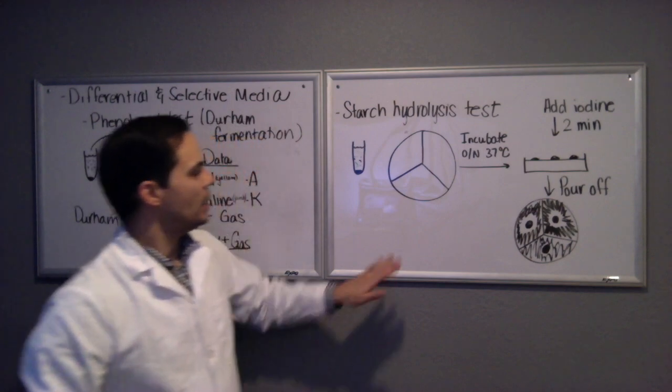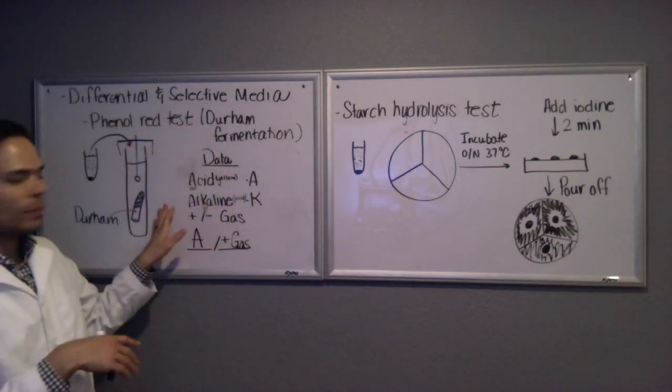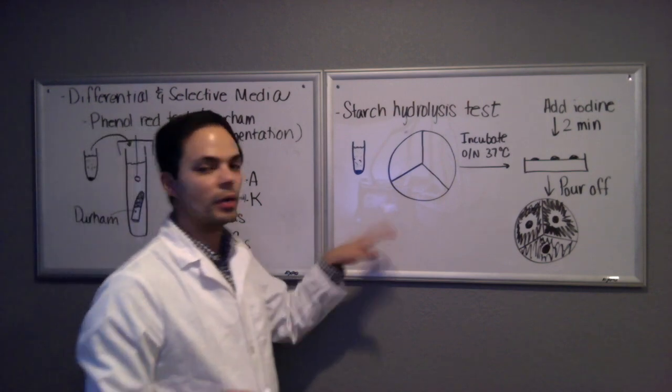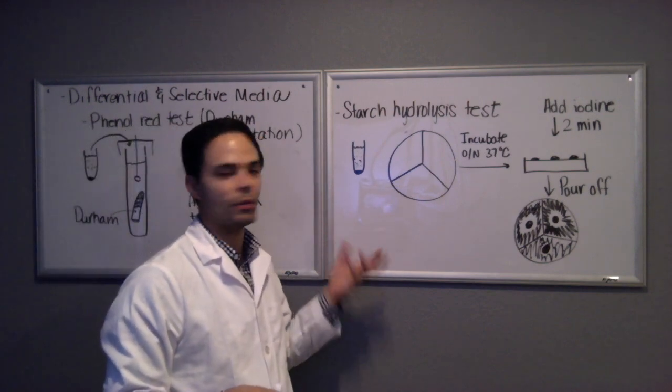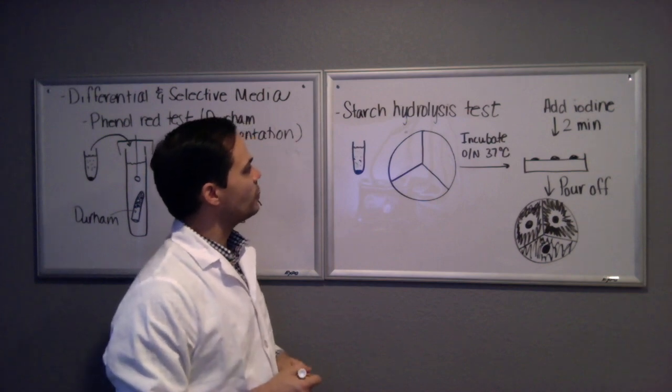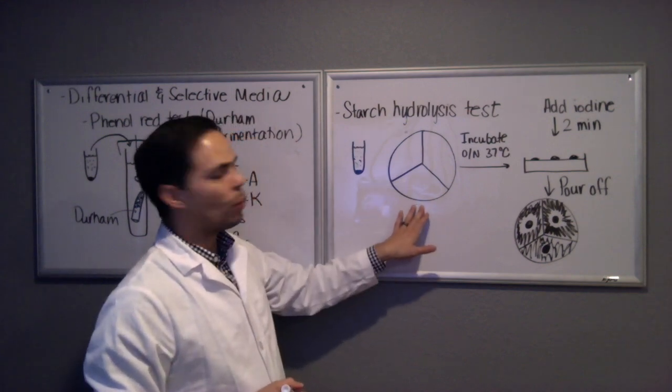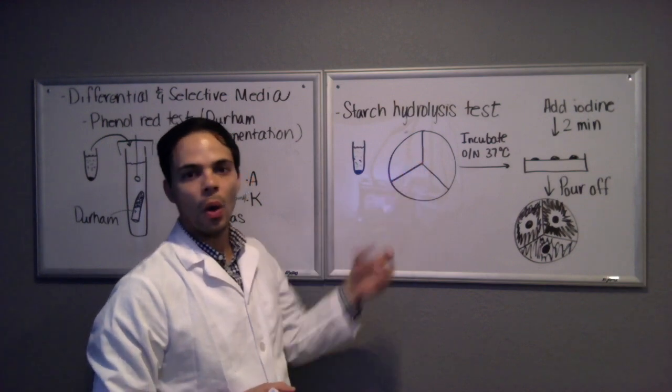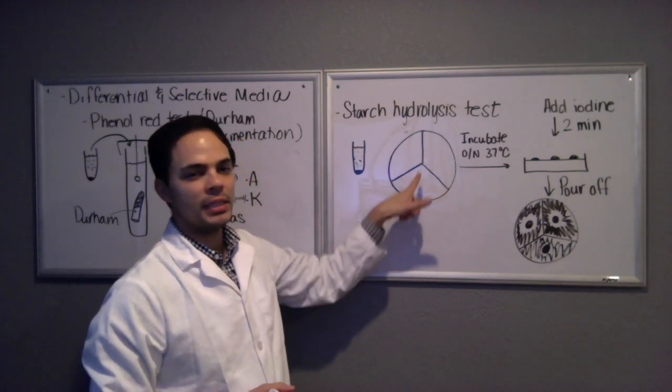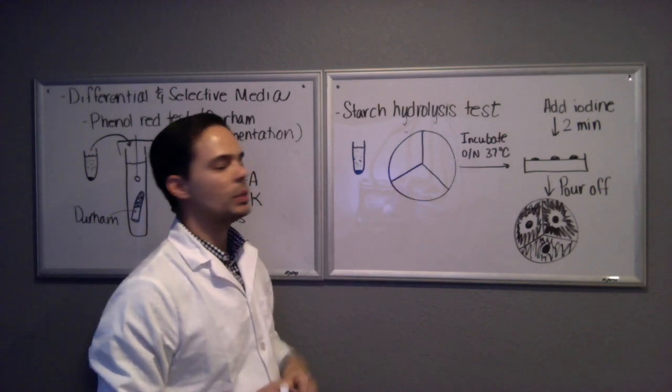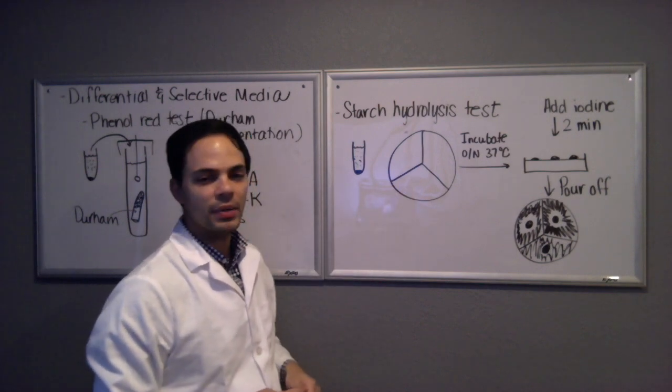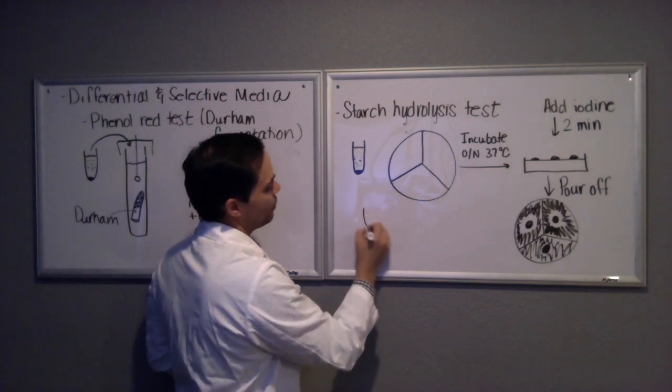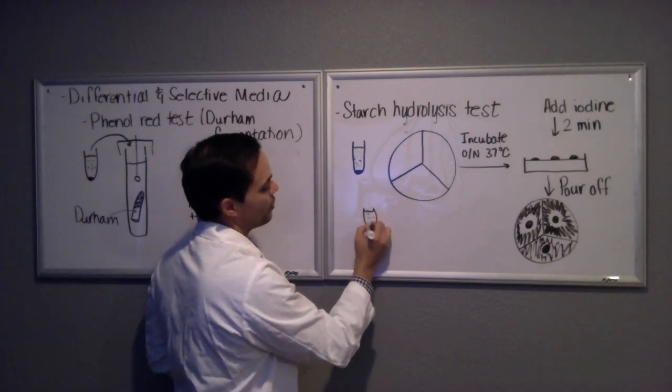Both of these are differential tests. Neither of these are selective, so there are no selective agents in here, they're just differential. The plates that we like to use actually have a plastic partition already in the plate that divides the plate into three separate regions so that we can test three different bacteria at one time.